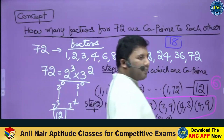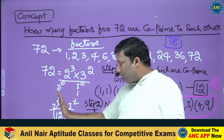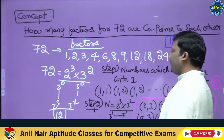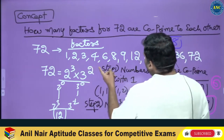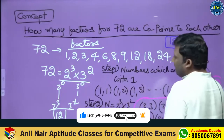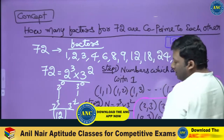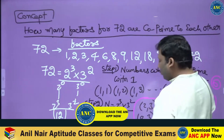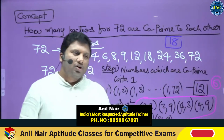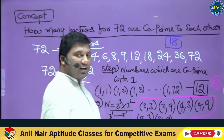72 is 2 power 3 into 3 square. 2 power 0 to 2 power 3, and 3 power 0 to 3 power 2 — 4 times 3 = 12 total factors. 1 is co-prime with every factor: 1 with 1, 1 with 2, 1 with 3, up to 1 with 72 — so 12 cases. Then powers of 2 against powers of 3: 3 times 2 = 6. So 12 plus 6 = 18. Total is 18.